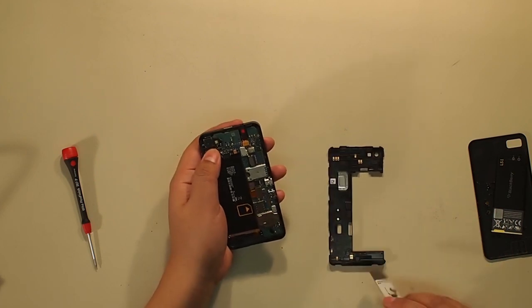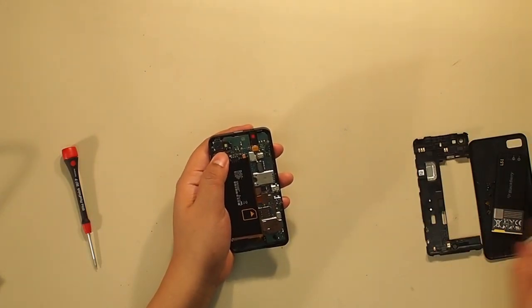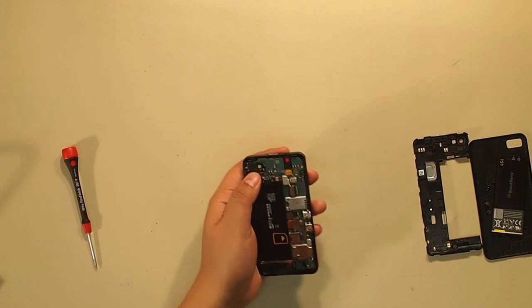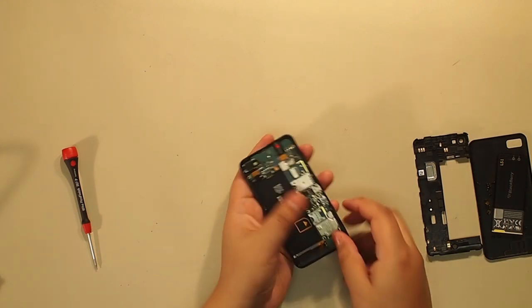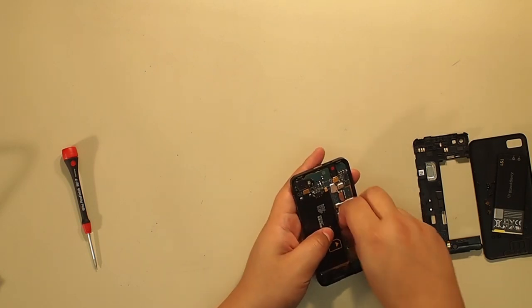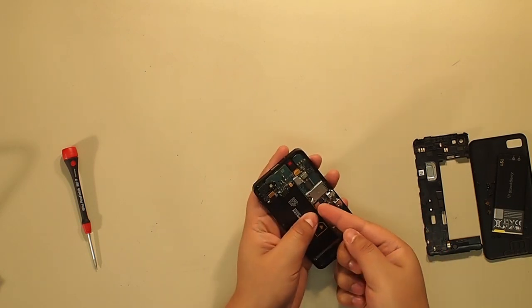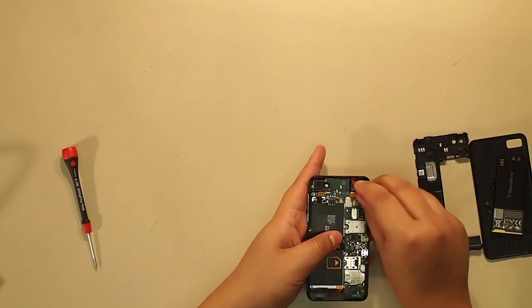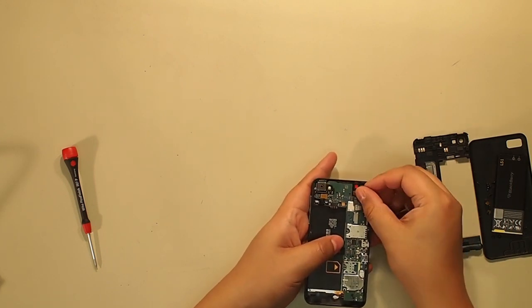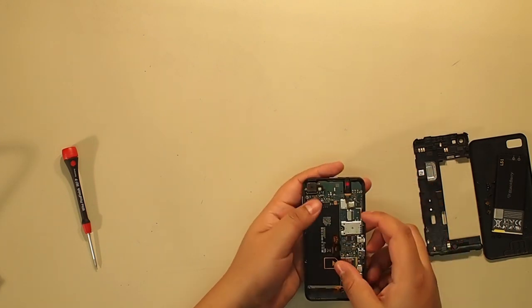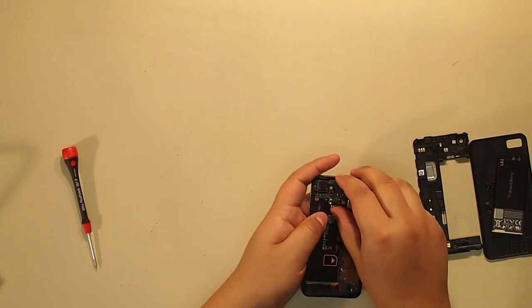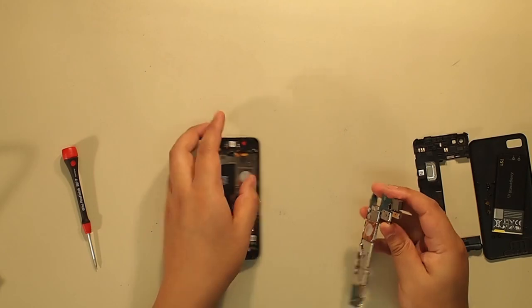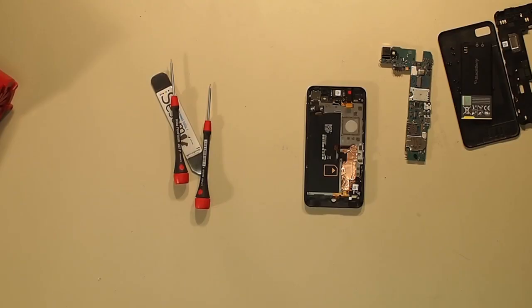Right away you can see that this BlackBerry has been water damaged. There's a red dot above the earpiece or on the earpiece speaker, right here. We're just gonna unclip all the connectors. There's about five of them. Make sure they're all unclipped before you start taking the motherboard out. The motherboard comes right out very easily and just put that aside.